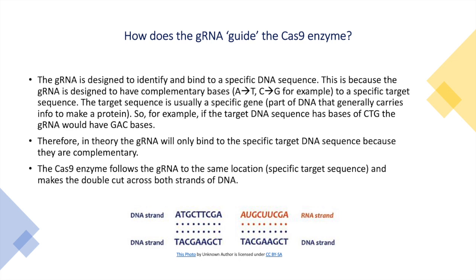The Cas9 enzyme follows the guide RNA to the same location — the specific target sequence — and makes a double cut across both strands of DNA, creating a double-stranded break at the target sequence.